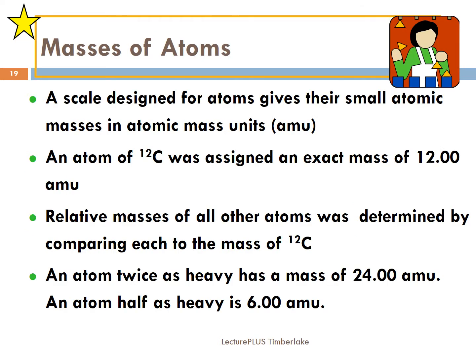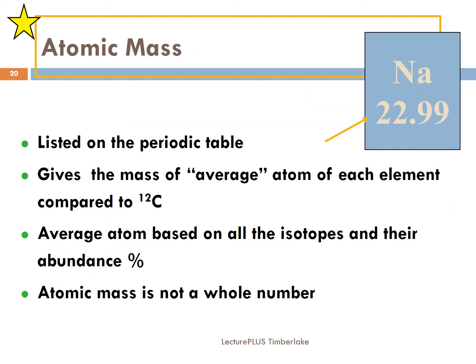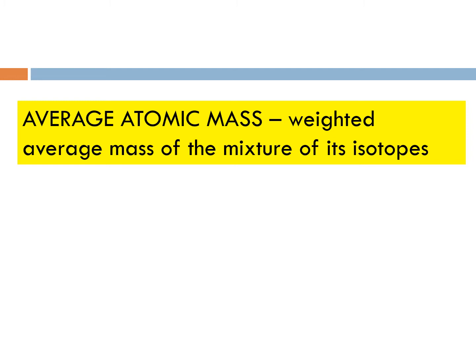Why on the periodic table do they have decimals — why don't they use whole numbers? That's because of isotopes. What they do is find the average of all the different isotopes. Everything is based on one standard, and that's carbon-12. So all the masses are based on the mass of carbon-12. The relative masses of all other atoms are always determined by comparing each to the mass of carbon-12. An atom twice as heavy has a mass of 24, and an atom half as heavy is 6. So atomic mass is not a whole number — it's the average of the atom of each element compared to 12, weighted by the abundance of each isotope.